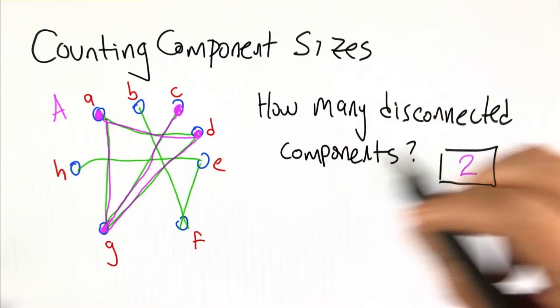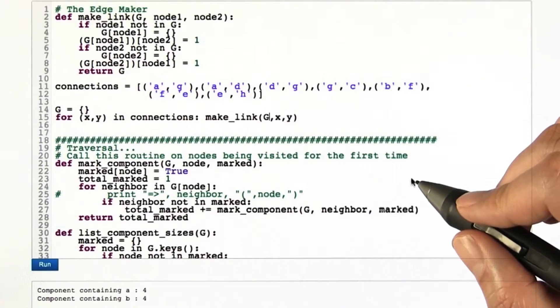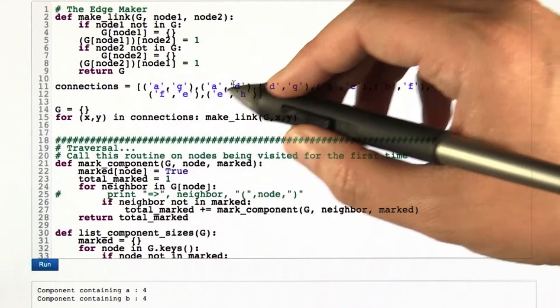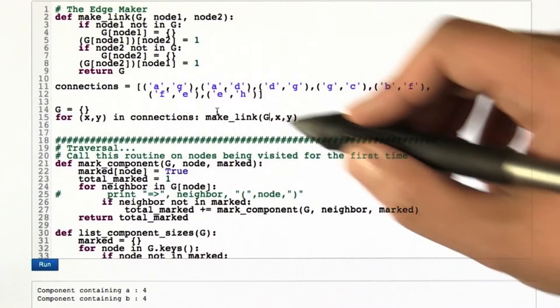Let's write some Python code to solve this particular example. Here's a translation of that problem and the solution into Python. First, I have a list of the connections in that graph that we're just looking at.